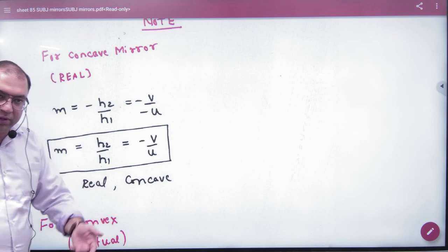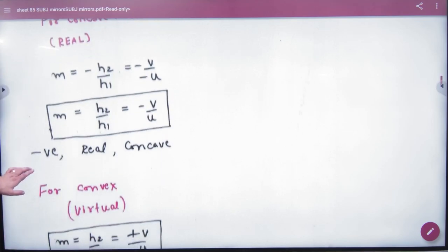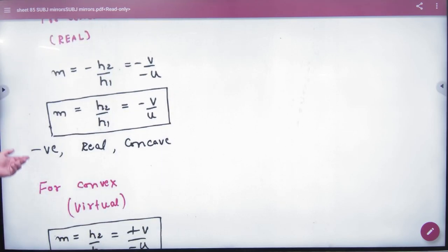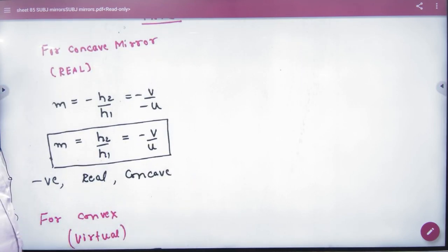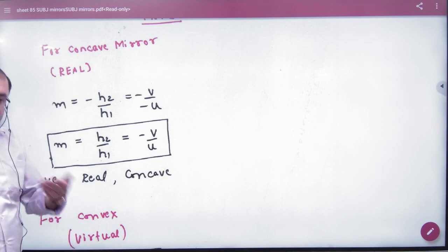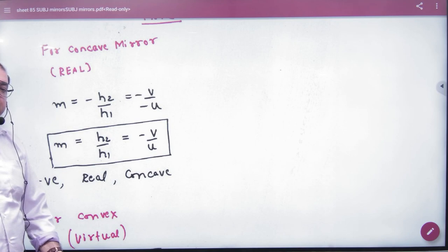The concave case is going on. And magnification value will be positive. Magnification will be positive when the case is virtual. Virtual image - what is the virtual image? It is a straight line. Let's note this.